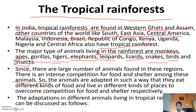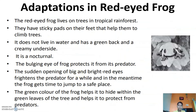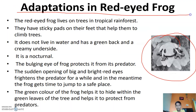There is a large number of animals found in these regions. There is intense competition for food and shelter among these animals, so the animals are adapted in such a way that they eat different kinds of food and live in different kinds of places to overcome competition for food and shelter.